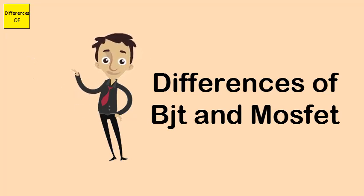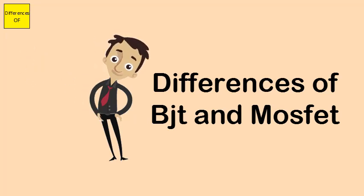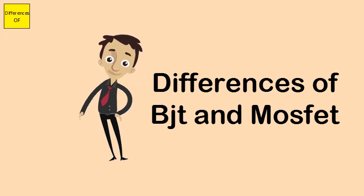BJT has an emitter, collector, and base. MOSFET has a gate, substrate, source, and drain.